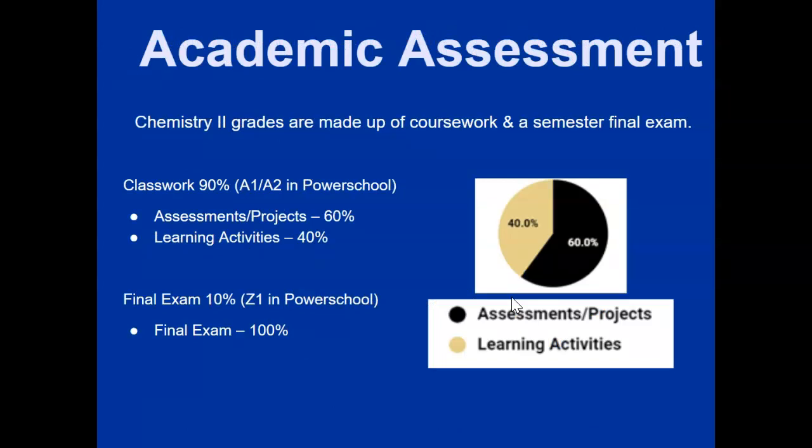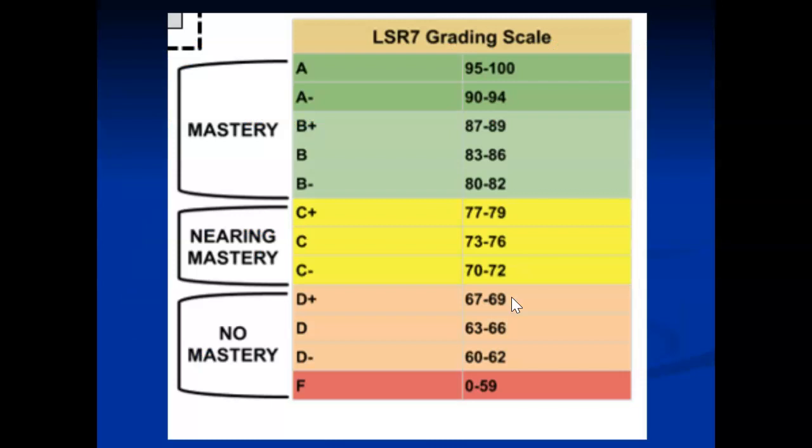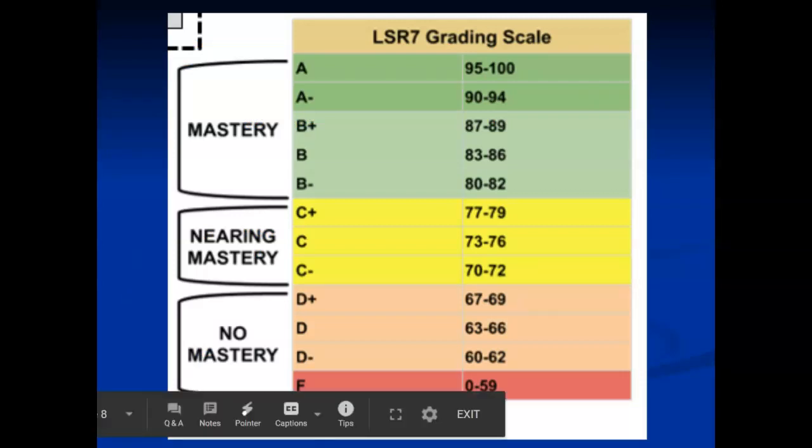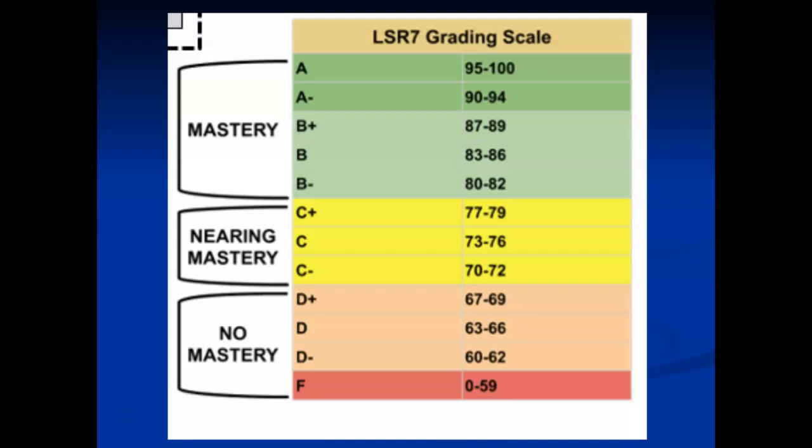Academic assessment — how do you get a grade in this class? Your semester grade is broken down into 90% classwork and 10% exams, specifically the final exam. Of your 90% classwork, 60% of that is assessments and projects, and 40% of that is learning activities. This is how LSR 7 considers mastery, nearing mastery, and no mastery.